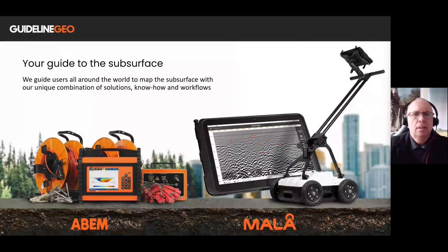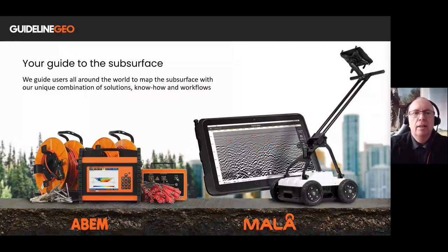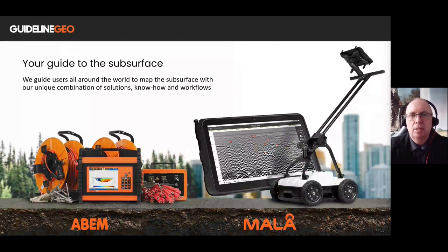Guideline Geo manufactures two product ranges. We have the ABM product range. This is where we design, develop, produce, and manufacture the seismic, resistivity, and TEM instrumentation.